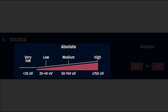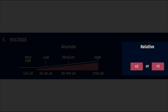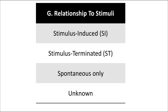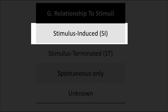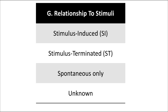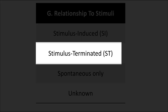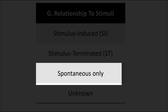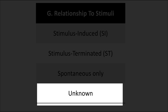The voltage is described in an absolute range from very low to high, and also relative to the overall baseline. The relationship to stimuli is also important to consider, though it can be difficult to determine without documentation in the record. If there is clear documentation of stimulation followed by emergence of the pattern, we call it stimulus-induced. Patterns terminated by stimulation are called stimulus-terminated. Patterns may also be spontaneous only, or the relationship may be unknown.